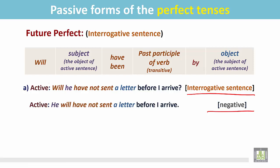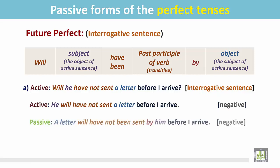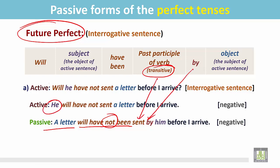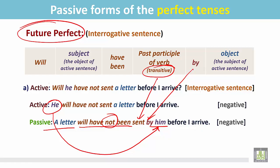Now it is in the negative as a statement. In the passive, the object of the active sentence becomes the subject — 'a letter' is now the subject. For the future perfect passive we write 'will have been', and since it is negative we put 'not' between 'have' and 'been': 'will have not been'. Then the past participle form of the transitive verb 'sent', followed by the preposition, and the subject of the active sentence becomes the object in the passive — 'him'. After the conjunction there is another verb with no object, so we cannot change that part into passive.